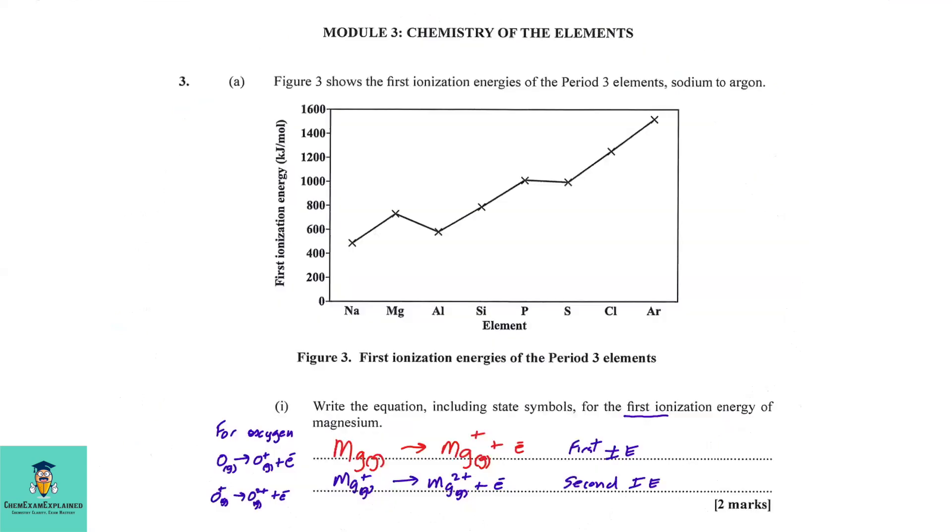3A. Figure 3 shows the first ionization energies of the period three elements, sodium to argon. Part 1: Write the equation including state symbols for the first ionization energy of magnesium. So the first thing we'll do is to write magnesium in the gaseous state to produce magnesium ion with a single charge plus an electron.